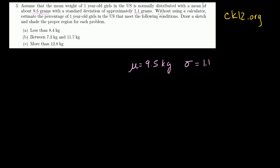Without using a calculator — that's an interesting clue. When they say to estimate without a calculator, that's a big giveaway that we're supposed to use the empirical rule, sometimes called the 68-95-99.7 rule. And if you remember the name of the rule, you've essentially remembered the rule.